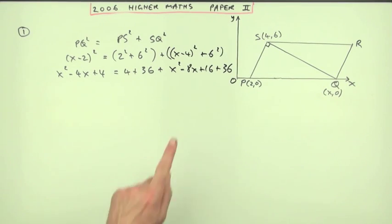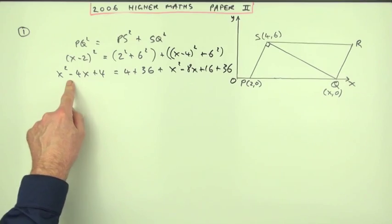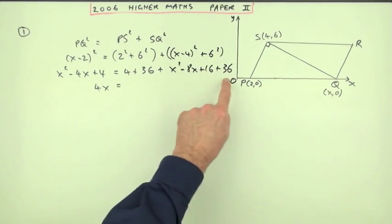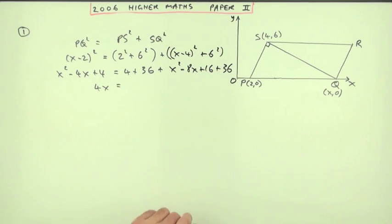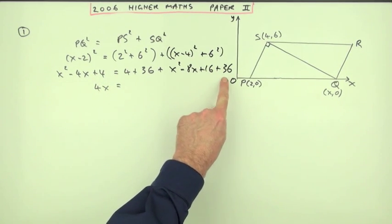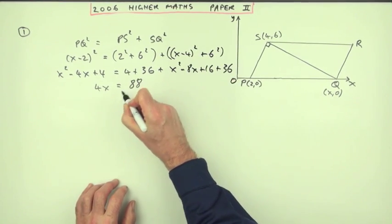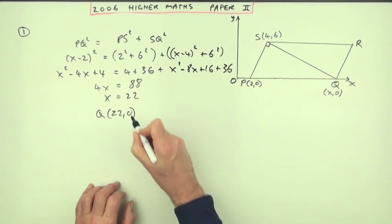Now, at least the X squareds will cancel out. Bringing that 8X over to join that would give you a plus 8X minus 4, it's just 4X. Then all these numbers, well, taking that 4 away cancels that out. So effectively, you've just got the 36, the 36, and the 16. So that would be 88, which means that X equals 22, and Q is the point 22,0.